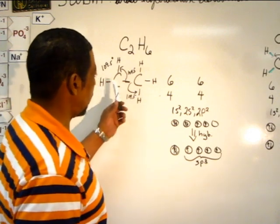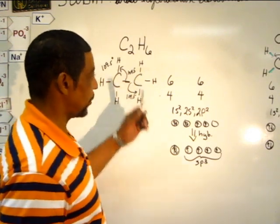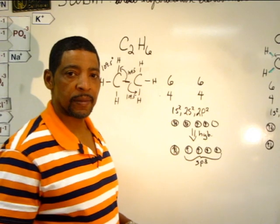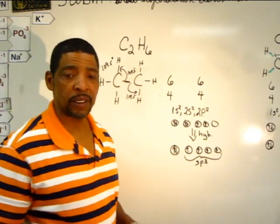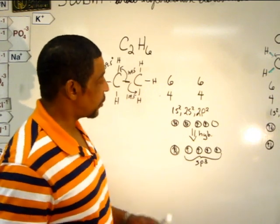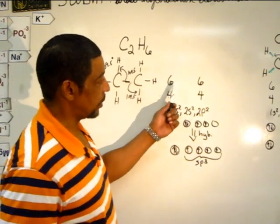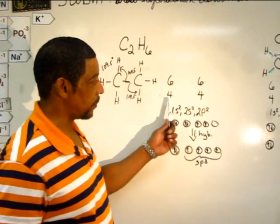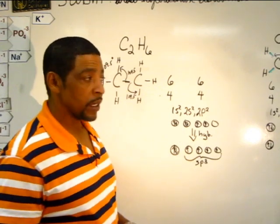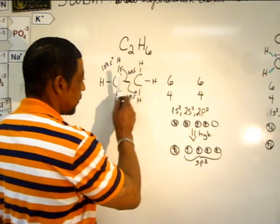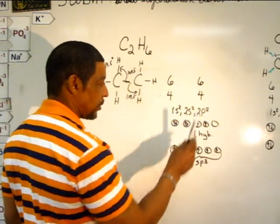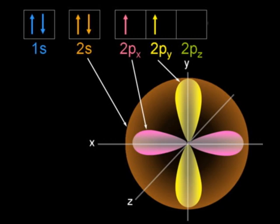Consider the simple compound ethane, where two carbon atoms will bond with six hydrogens. In this compound, the carbon atoms will undergo hybridization. Each carbon atom contains a total of six electrons, and four electrons are found on the valence shell. The electron configuration for each of the carbon atoms is 1s2, 2s2, and 2p2. The orbital diagram will show a full 1s subshell, a full 2s subshell, and two of the orbitals in the 2p subshell are occupied with one electron.